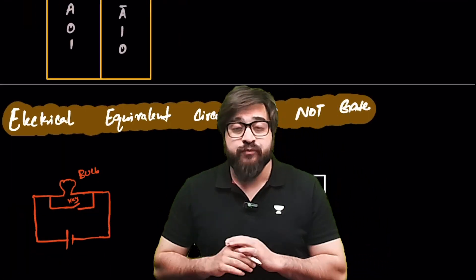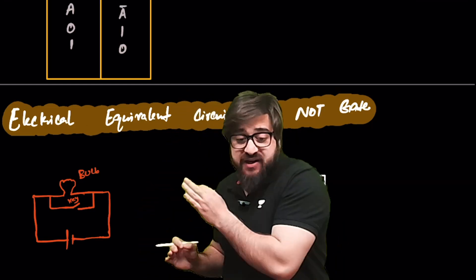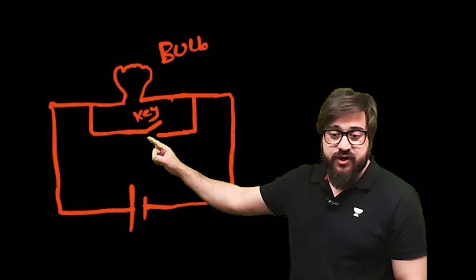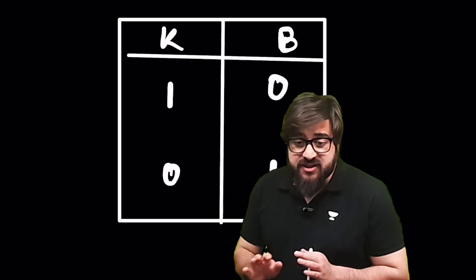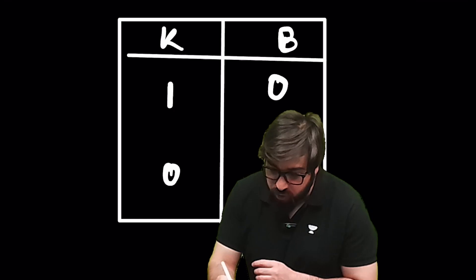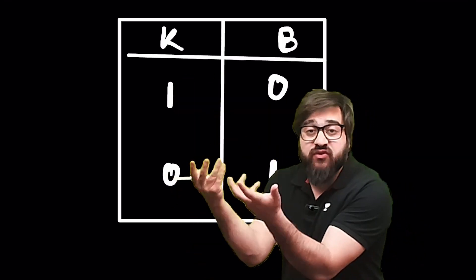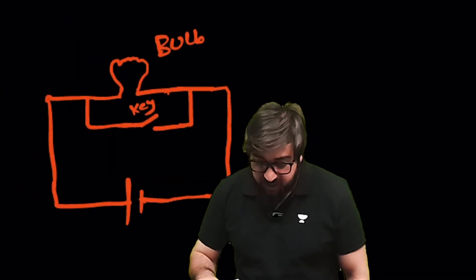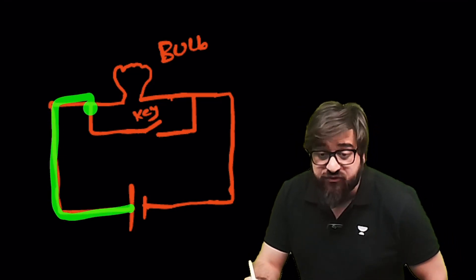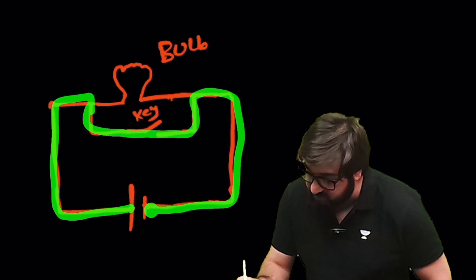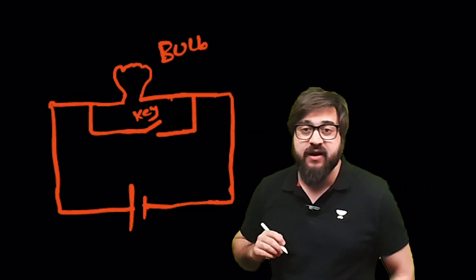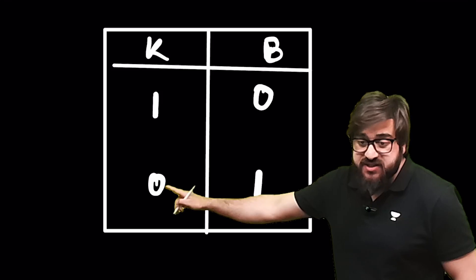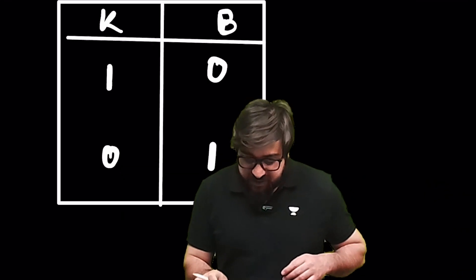The electrical equivalent circuit of the NOT gate is a circuit that behaves exactly like the NOT gate. We have a bulb, a switch, and a battery. If the key is on (1), current flows through the switch path — since current prefers the path of less resistance, no current flows through the bulb, so the bulb remains off. If the key is off, the bulb remains on.